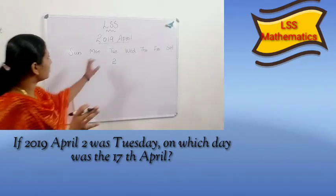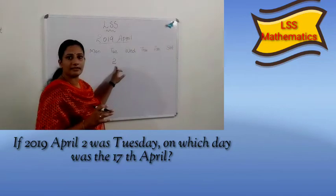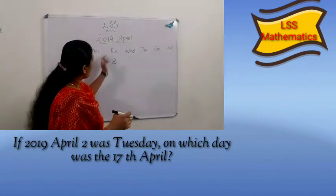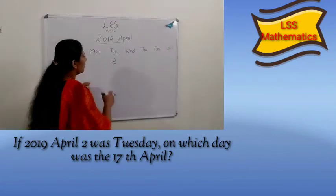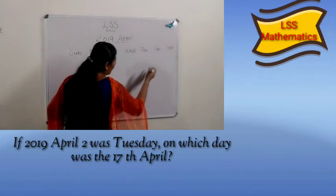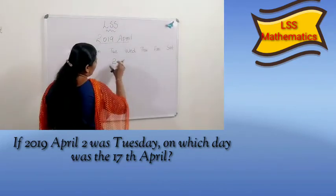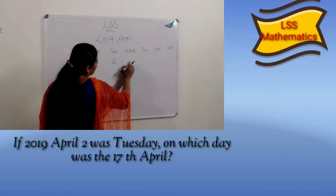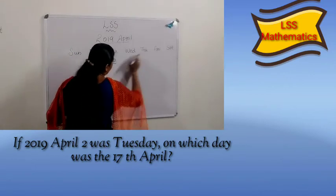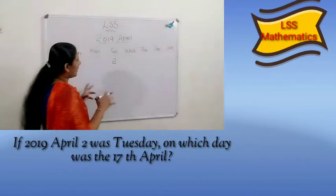Children, here 2019 April 2nd Tuesday is given. After the next Tuesday we can write 3, 4, 5 like this. Better you can write the calendar — next Wednesday and the other one. The number of days is 3, 4, 5. That is what you can write.